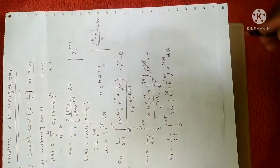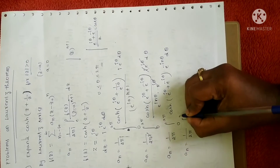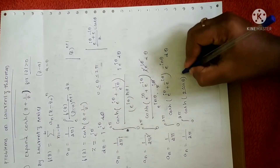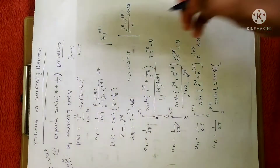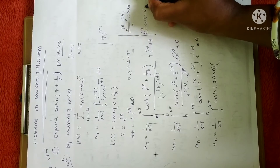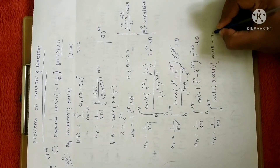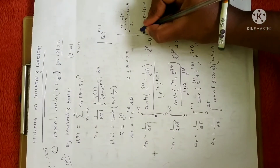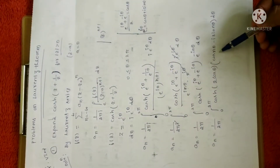So a_n = (1 / 2π) · ∫₀²π cosh(2 cos θ) · e^(-inθ) dθ. Now expanding e^(-inθ) using Euler's formula: e^(iθ) = cos θ + i sin θ, so e^(-inθ) = cos(nθ) - i sin(nθ). So a_n = (1 / 2π) · ∫₀²π cosh(2 cos θ) · [cos(nθ) - i sin(nθ)] dθ.